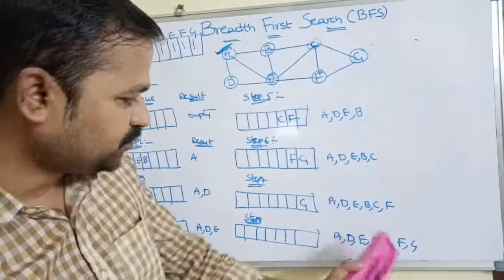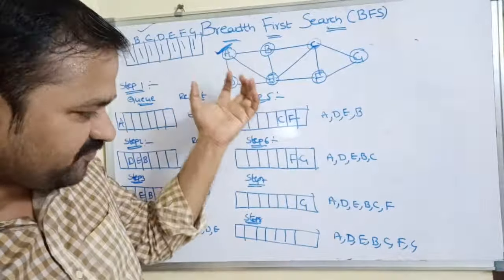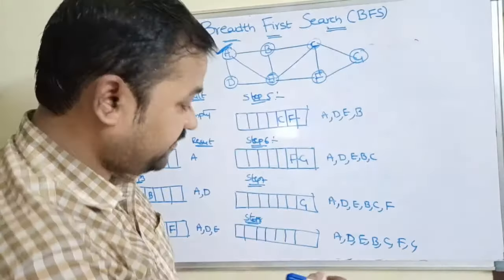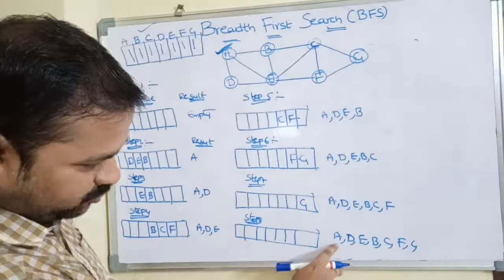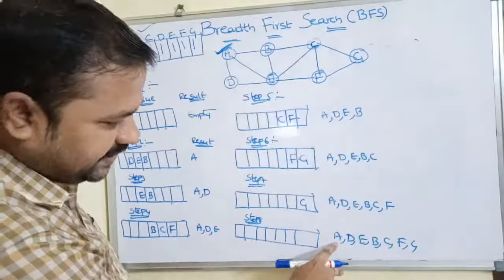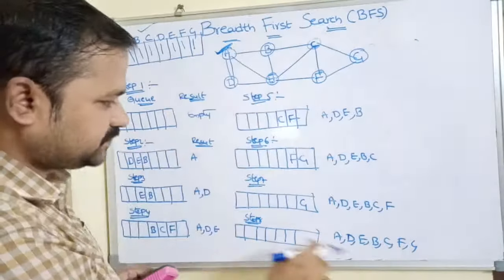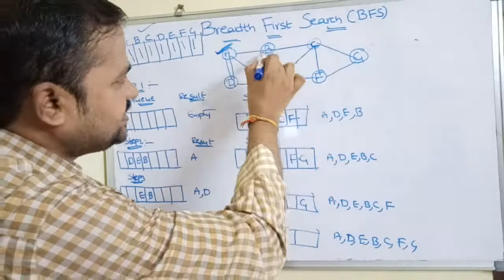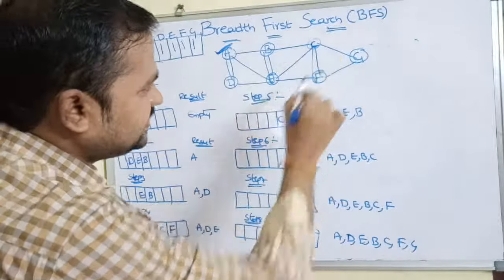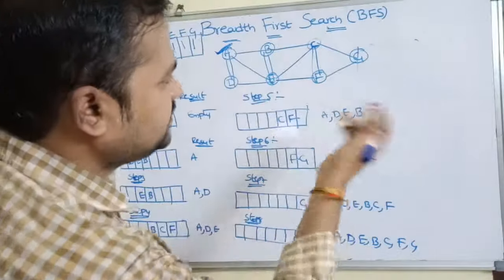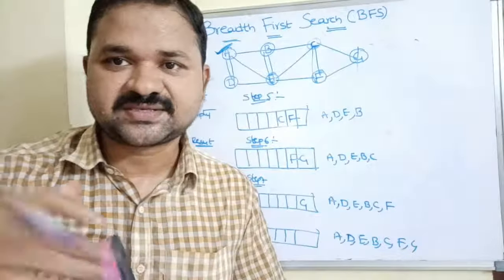The final BFS traversal output is: A, D, E, B, C, F, G. Level zero contains A; level one contains D and E; level two contains B, C, and F; and the next level contains G. This is how we traverse a graph using BFS — level by level searching.